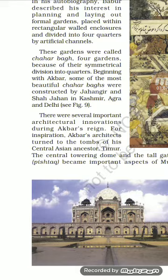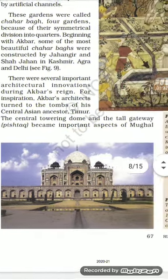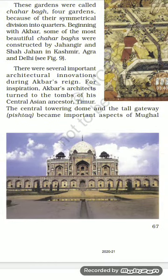Chaar samaan hisson mein bate hone ke kaaran ye Char Bagh kehlate the. Char Bagh banane ki parampara Akbar ke samay se shuru hui thi. Kuch sarvadhik sundar Char Baghon ko Kashmir, Agra aur Delhi mein Jahangir aur Shah Jahan ne banwaya tha.